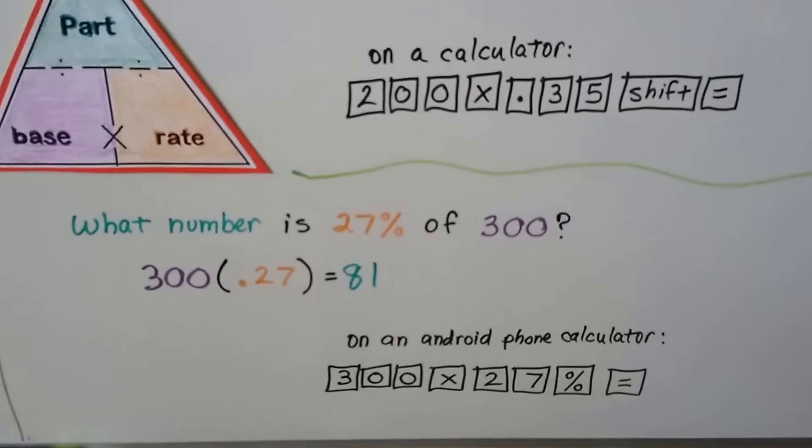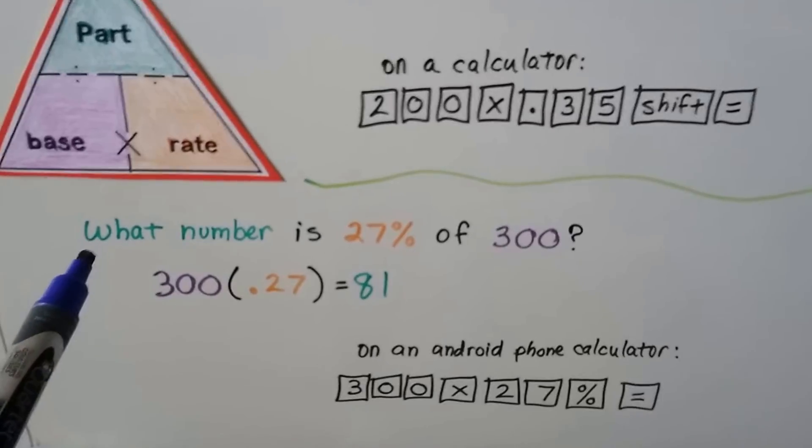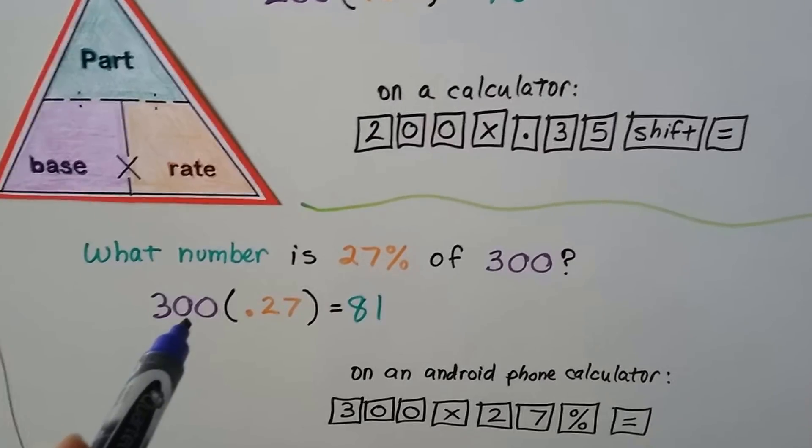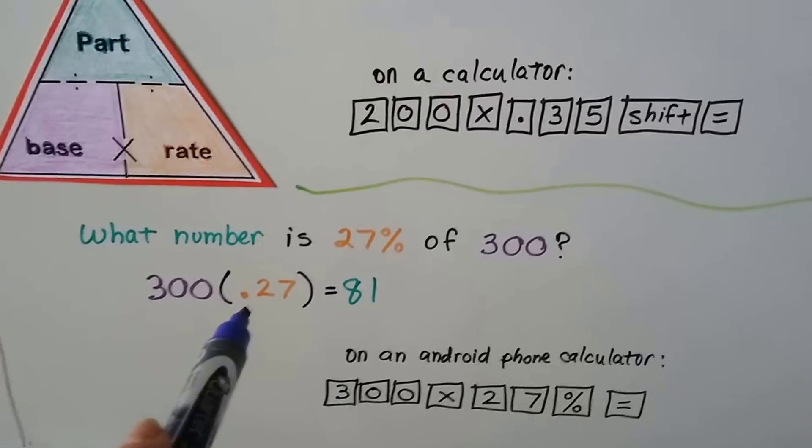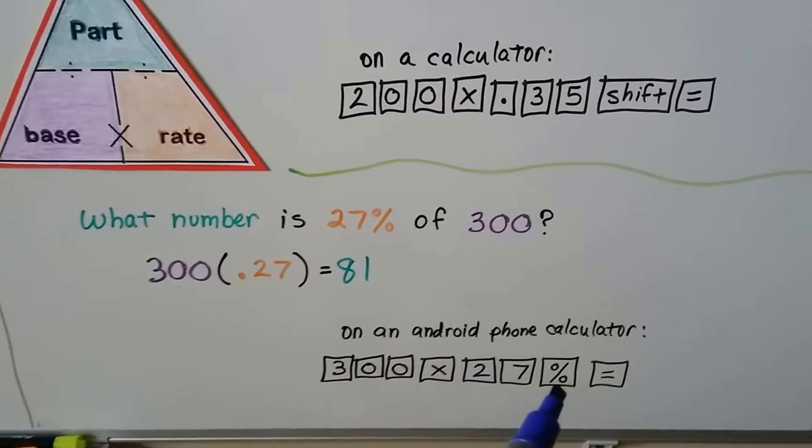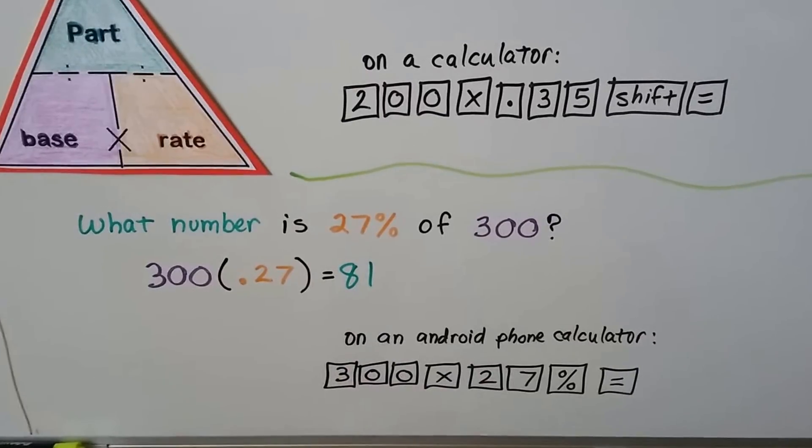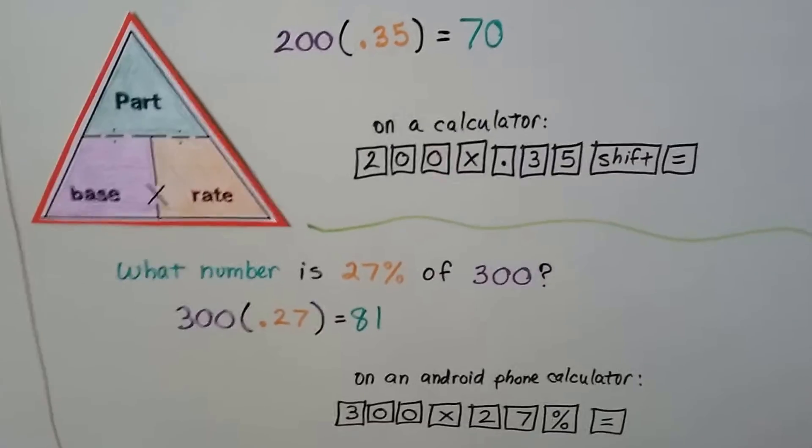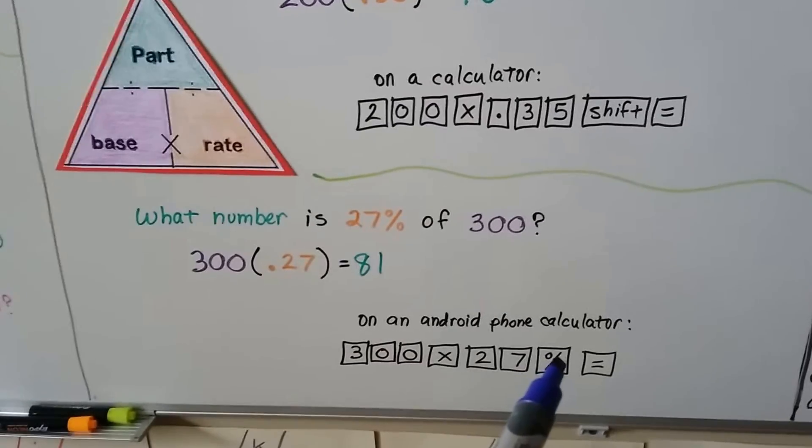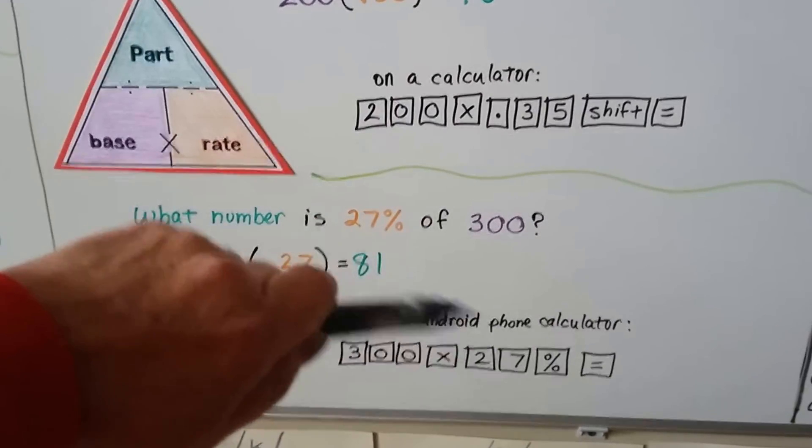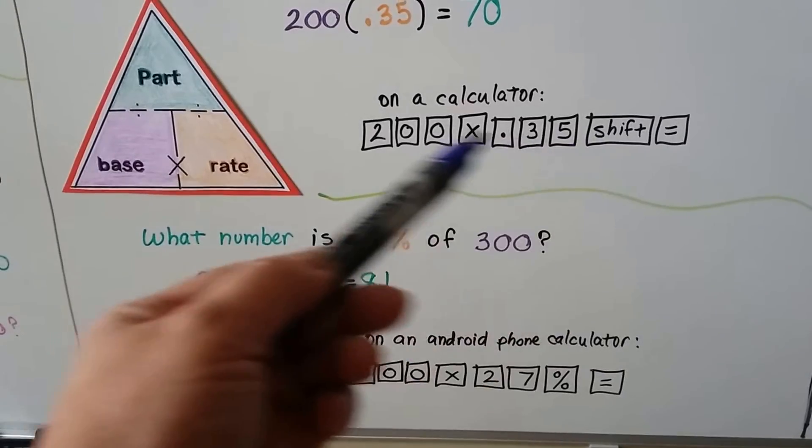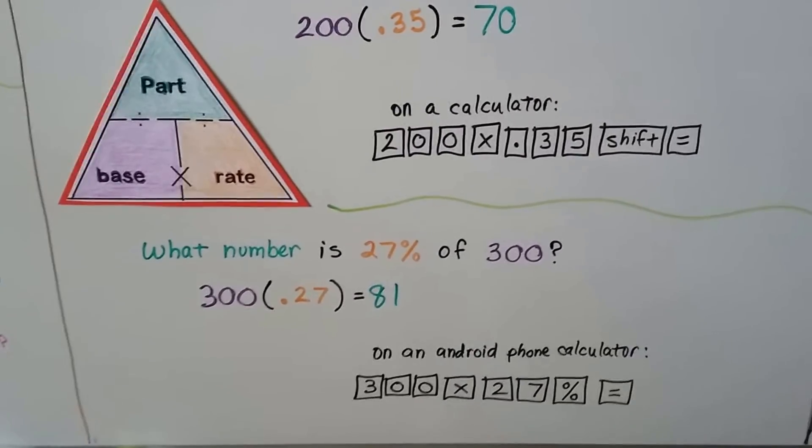Now, if you're using an Android phone calculator, it's a lot easier. What number is 27% of 300? We're looking for the part. So we have to do base times rate. So we would do 300 times .27, because that's what this is as a decimal. And we would put in 3, 0, 0, hit the multiplication sign, 2, 7, and hit the percentage button equals, and it'll give us an 81. So depending which calculator you have, like the one in the GED test, you might have to push shift equals, but on an Android phone calculator, you just hit the percentage sign after the 27. You don't need to do this. You could just do 27% times 300 equals. That's easy, isn't it? But get used to this shift equal ones, because you're not going to be allowed to have your phones in the GED test.